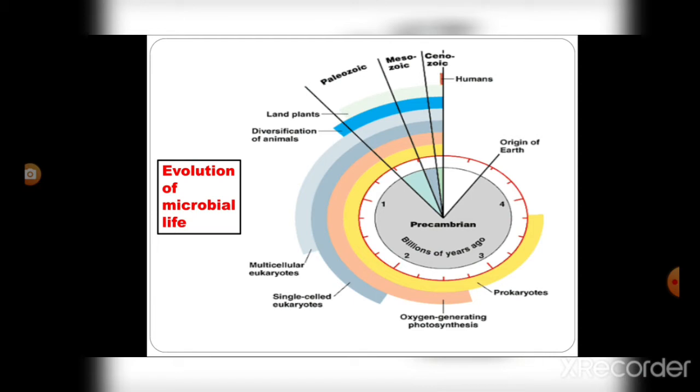First, prokaryotes were originated on Earth, then oxygen-generating photosynthesis, then single-celled eukaryotes, then multicellular eukaryotes, then diversification of animals, and then land plants with respect to the Paleozoic, Mesozoic, and Cenozoic eras. At last, humans originated. This is the evolution of microbial life.